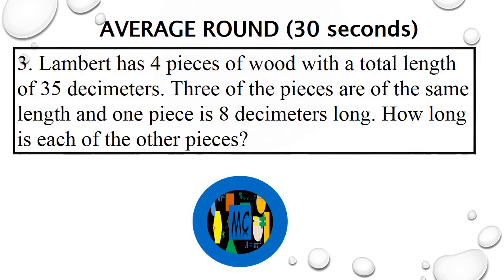Question 3. Lambert has 4 pieces of wood with a total length of 35 decimetres. 3 of the pieces are of the same length and 1 piece is 8 decimetres long. How long is each of the other pieces? Go! Question 3. Lambert has 4 pieces of wood with a total length of 35 decimetres. 3 of the pieces are of the same length and 1 piece is 8 decimetres long. How long is each of the other pieces? Go!